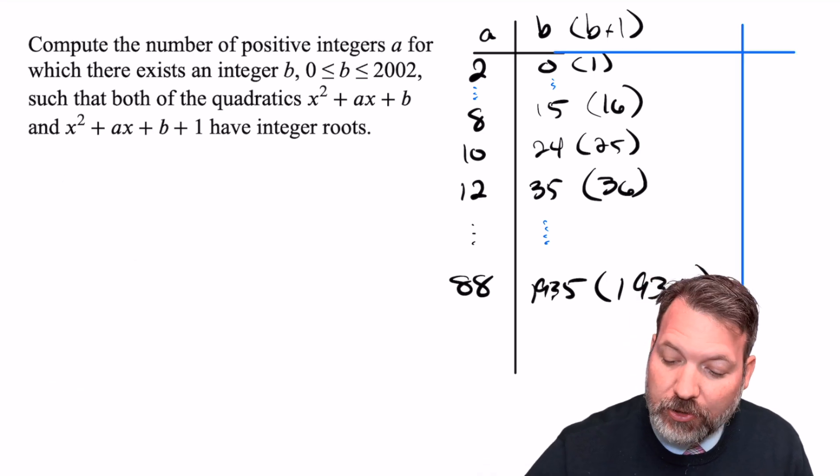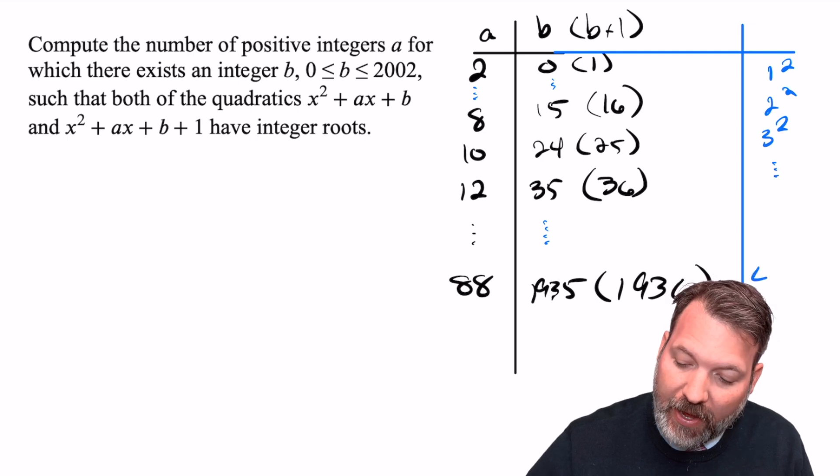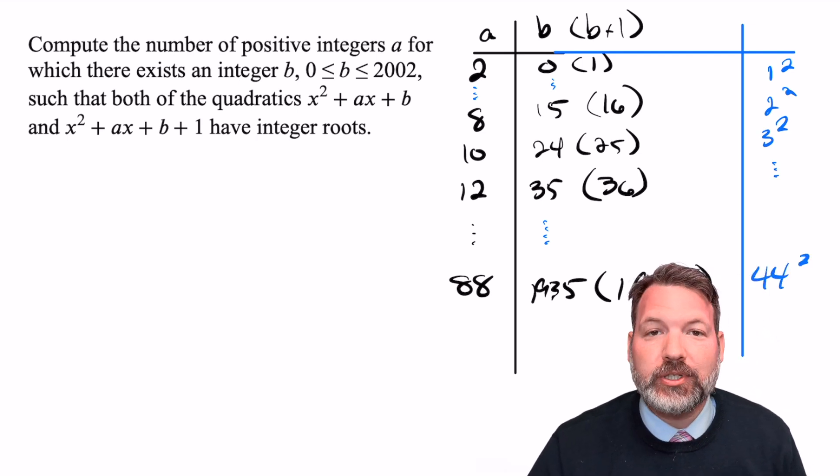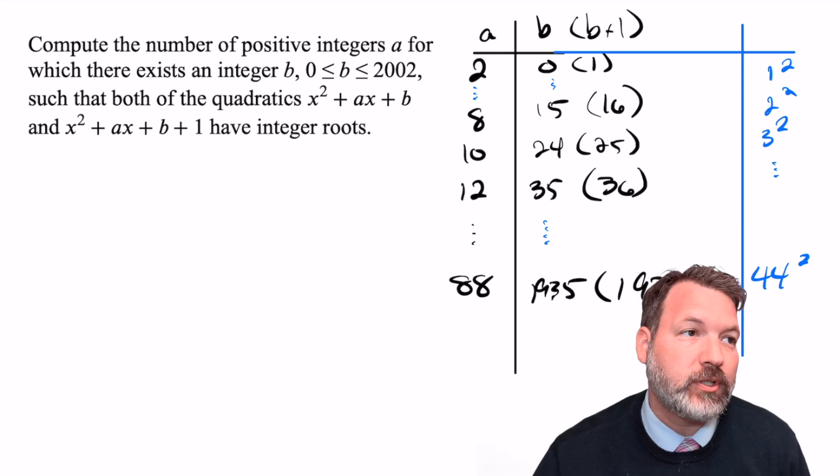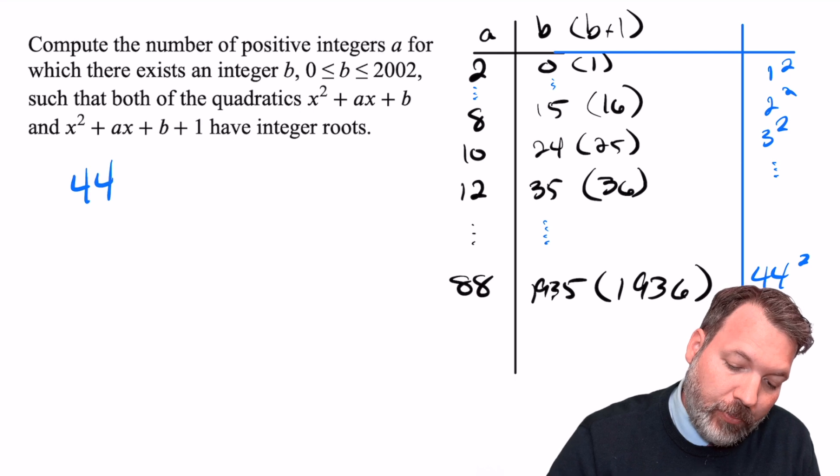Our counting job is now just about adding up how many perfect squares there are. And if we write these out as perfect squares, we can see really, we're just counting one, two, three, four squared, all the way up until 44 squared, which is 44 different numbers. So it should be the case that there are 44 different values for B, non-negative, right has to start at zero, and go all the way up until the last time that it happens at 1935, that work in this problem.